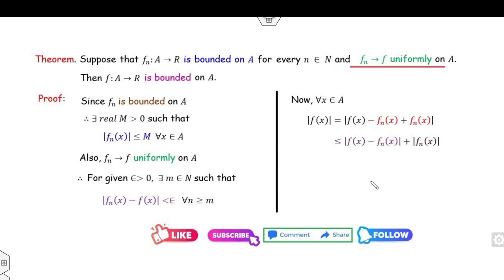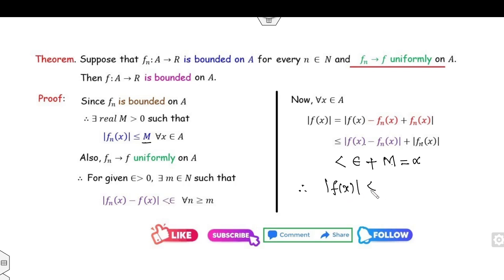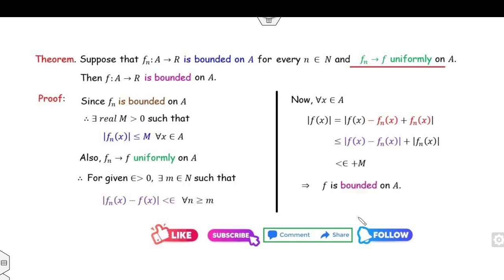Substituting: |f(x) − fn(x)| < ε and |fn(x)| ≤ M. So |f(x)| < ε + M. Since M is a real constant and ε is a real constant, I call this number α. Therefore |f(x)| < α, which means f is a bounded function. That completes the proof.